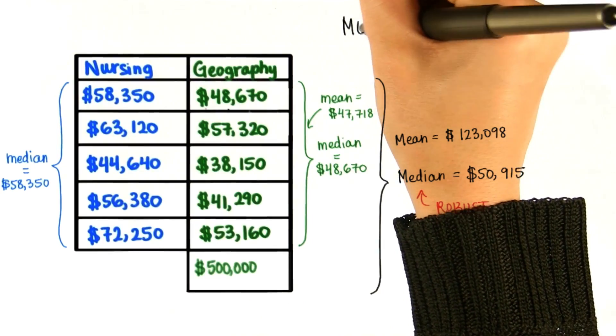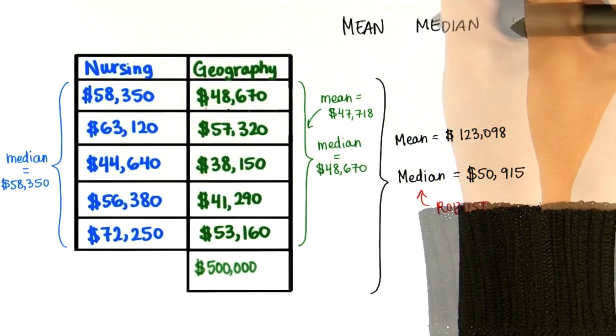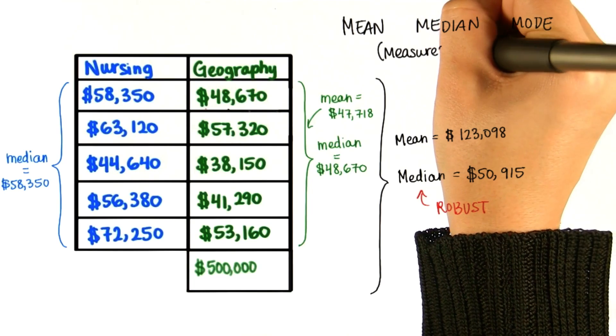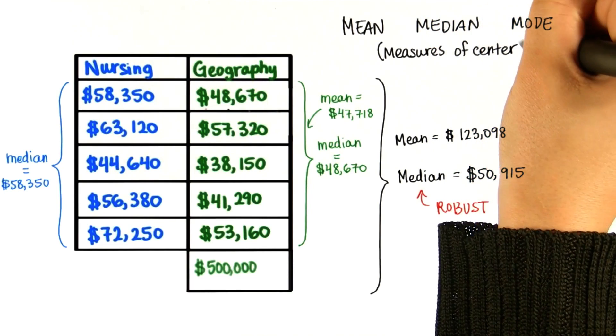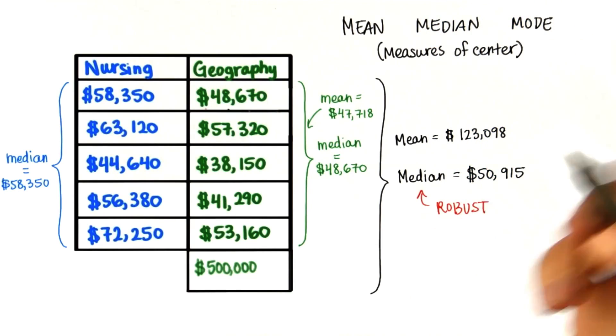So now you've learned about the mean, the median, and the mode. These are all measures of center, because they typically describe the center of the distribution.